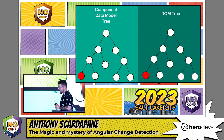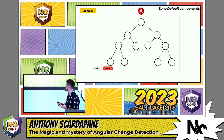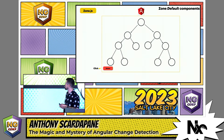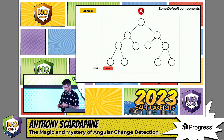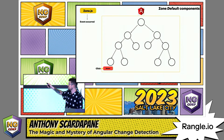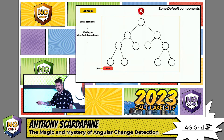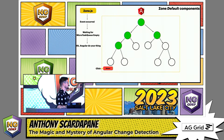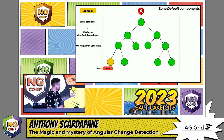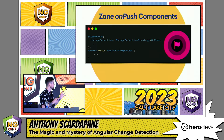Let's go over some examples, starting with the default zone components — these are our regular Angular components. What happens when a button is clicked in one of the child components: ZoneJS is listening and says an event occurred. It waits for the microtask queue to be empty, then tells Angular to run change detection. Angular starts at the root node and traverses the whole component tree, and eventually finds the component with a different data binding and goes ahead and updates that.